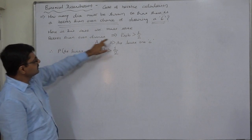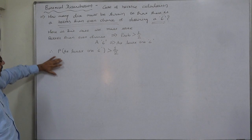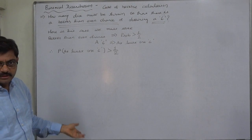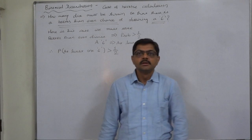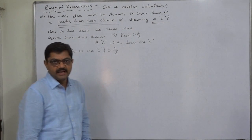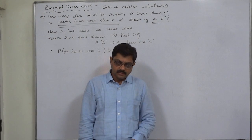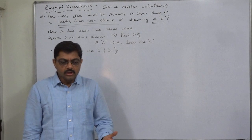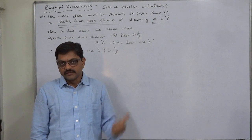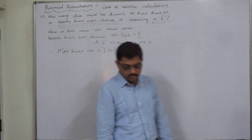The interpretation is: 'better than even chance' means probability greater than half, and '6' means at least one 6. So the interpretation is: the probability of at least one 6 is greater than half. Now, why should we solve this by binomial distribution? 'How many dice' means n, the number of trials, is finite and fixed. The probability of obtaining a 6 remains constant across all dice, as does the probability of not getting a 6. All the dice are independent of each other. So this case satisfies all the conditions of binomial distribution.